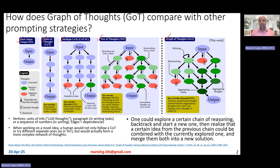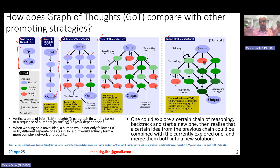In the simple input-output case, you have an input, pass it to the large language model — with one-shot, few-shot, or zero-shot in-context learning — and get the output. In chain of thought, also called the 'think step by step' strategy, you give the input to the LLM, it generates a bunch of intermediate thoughts, and finally comes up with the final output. In chain of thought with self-consistency, you generate multiple chains and use an evaluation function to identify the best one, abandoning others.